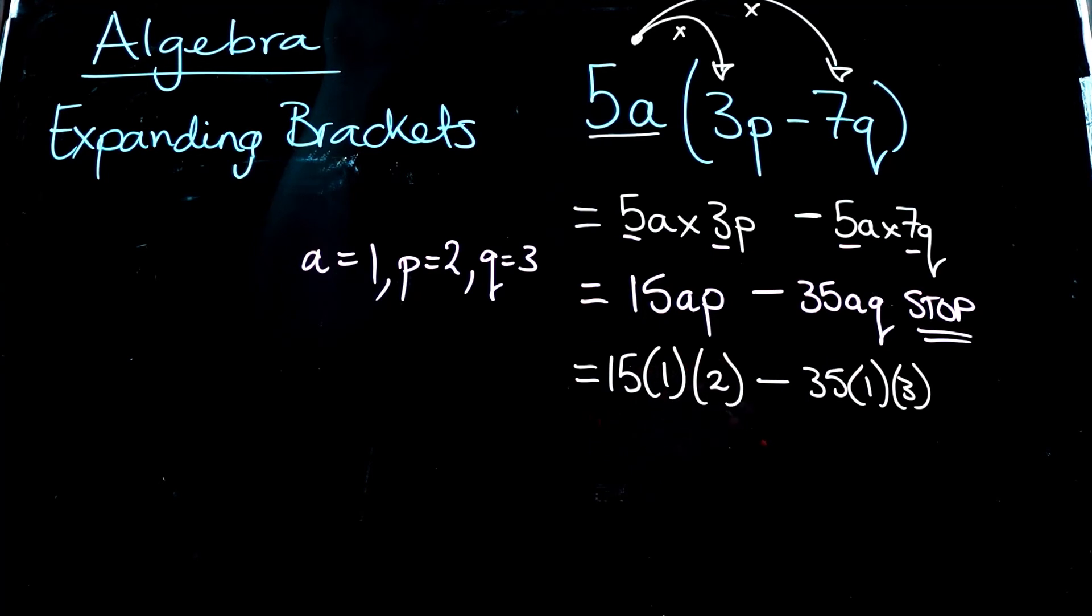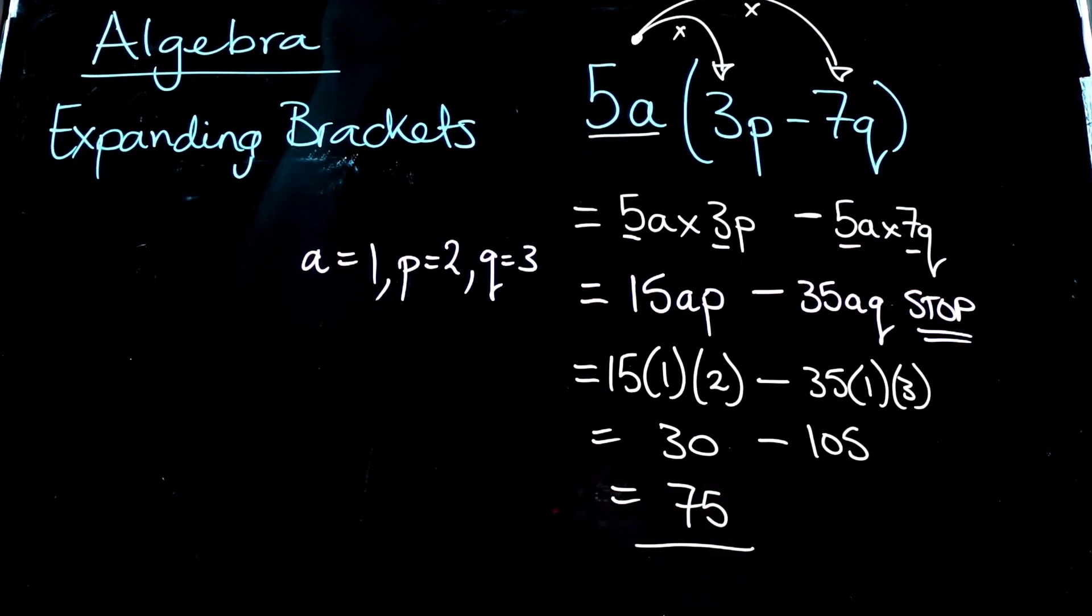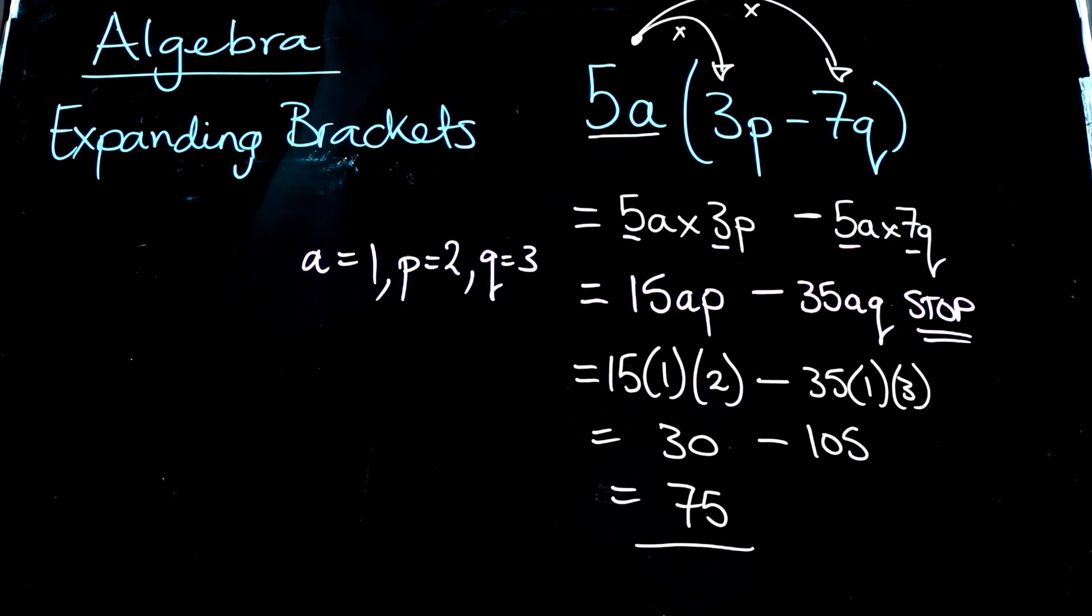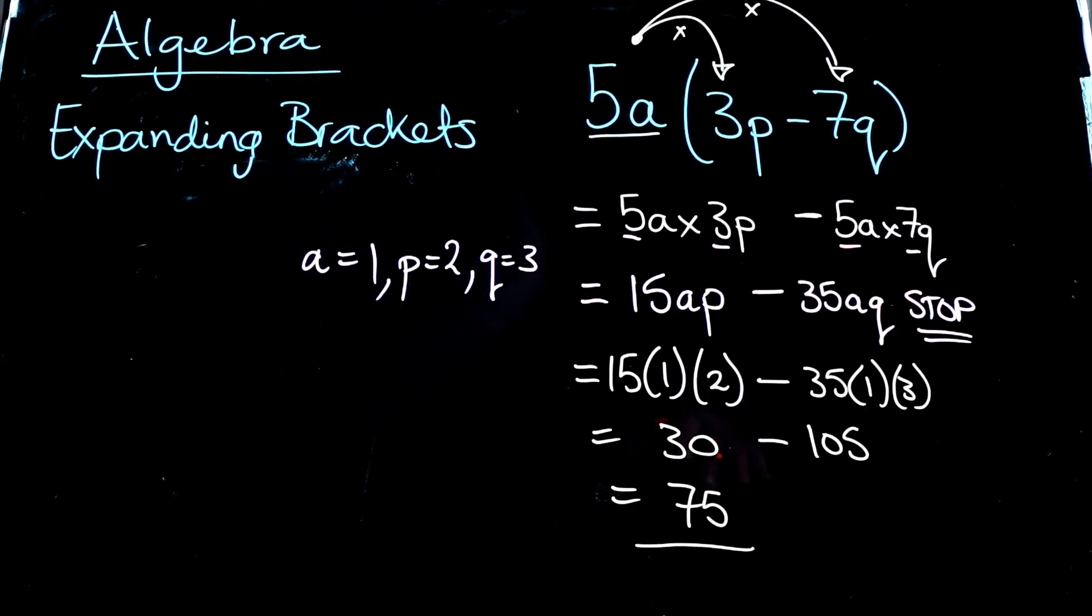So we have to remember that this is multiplication. So 15 times 1 is still 15, times 2 is 30. Subtract 35 times 1 is still 35, times 3 is 70, is 105. So we're back to getting an answer here. We're evaluating. And now we can write our final answer as just a number.